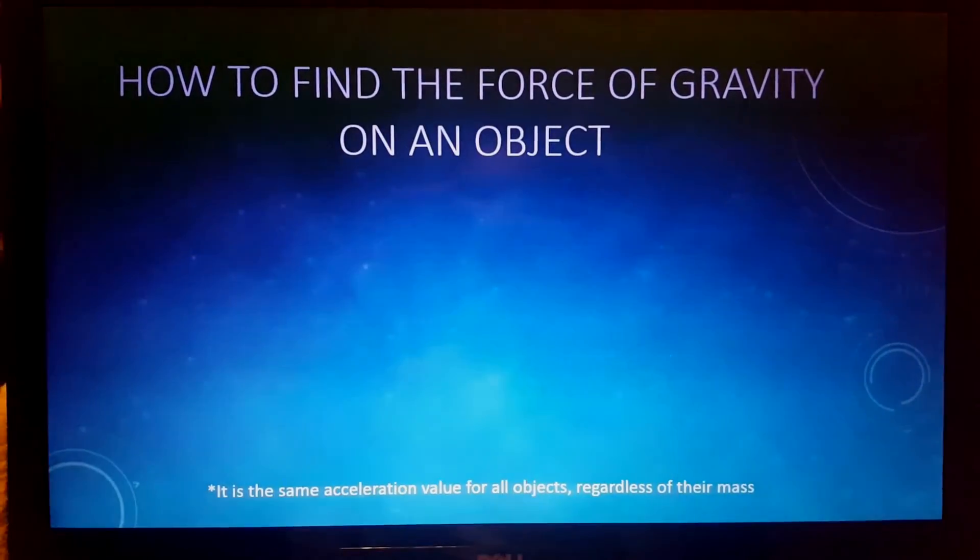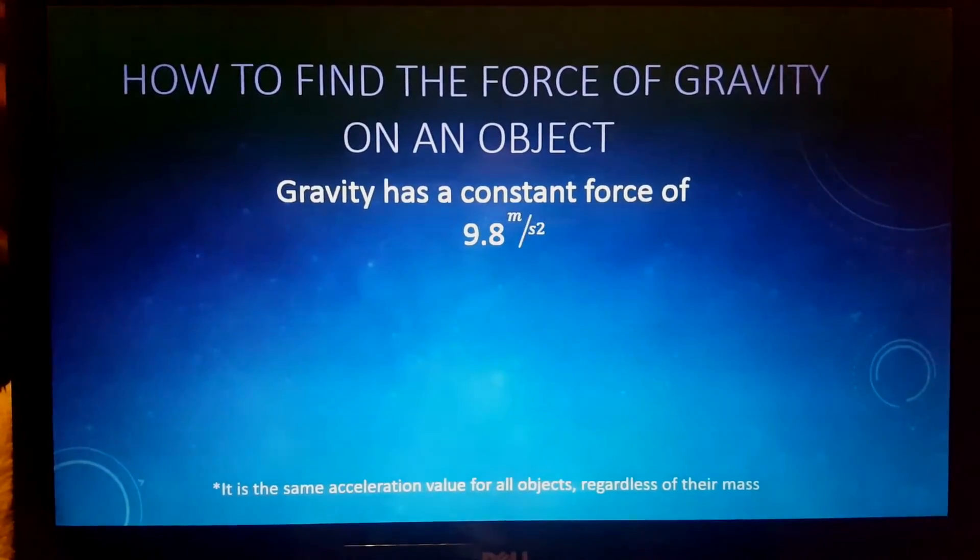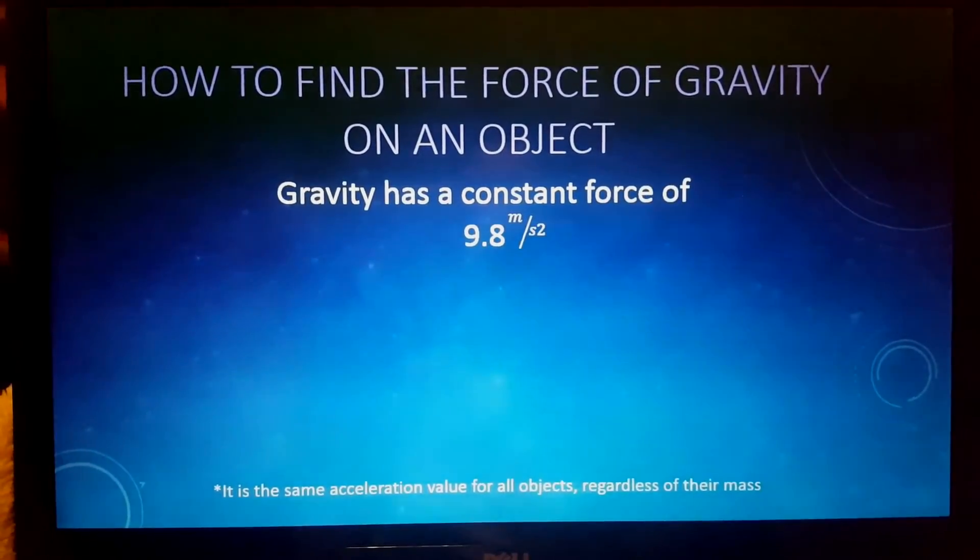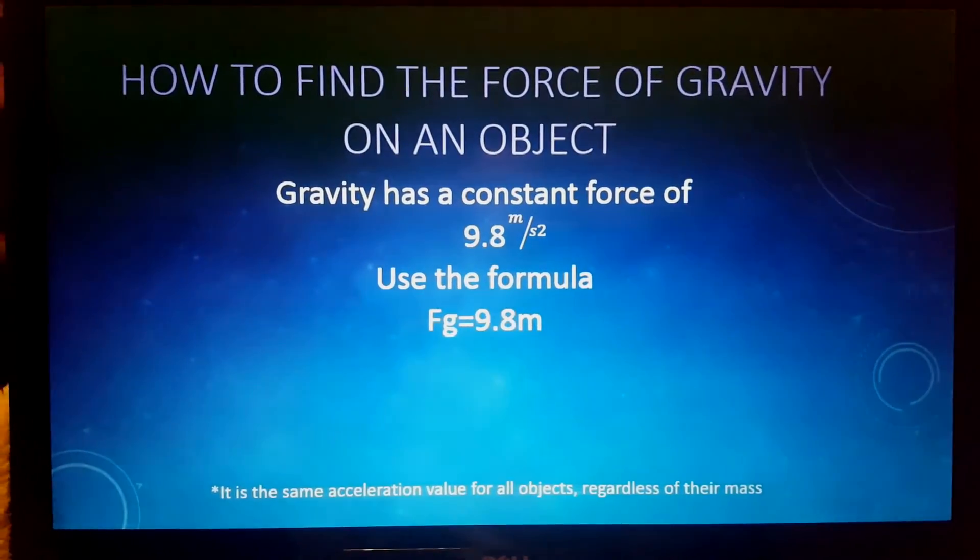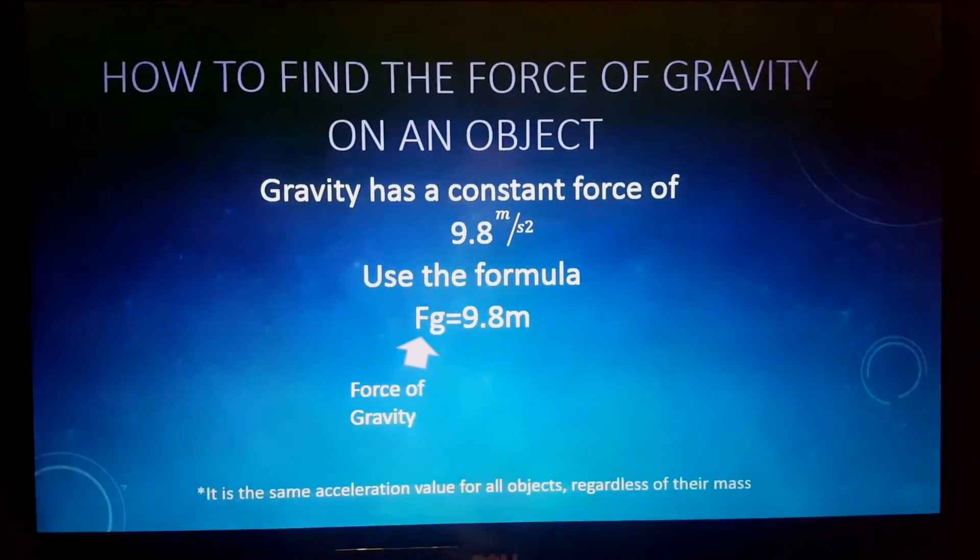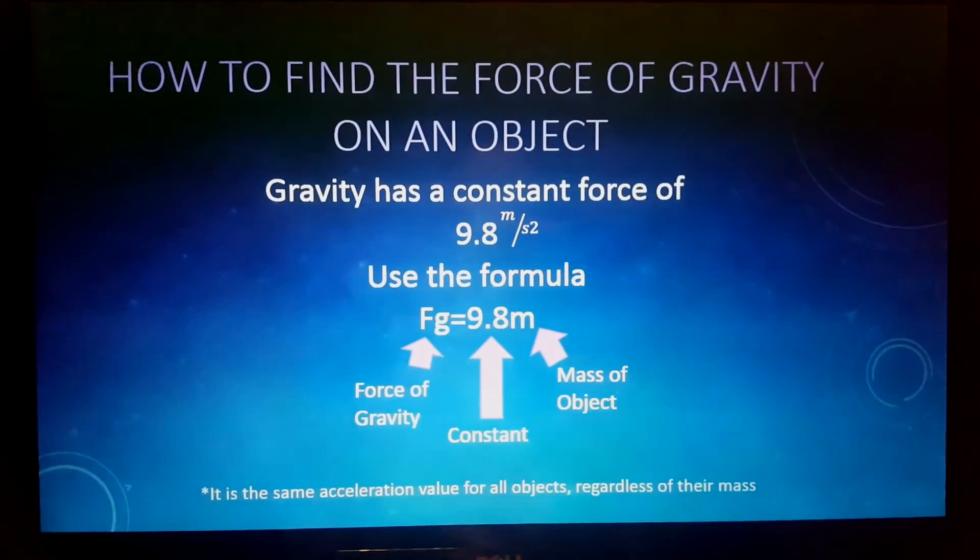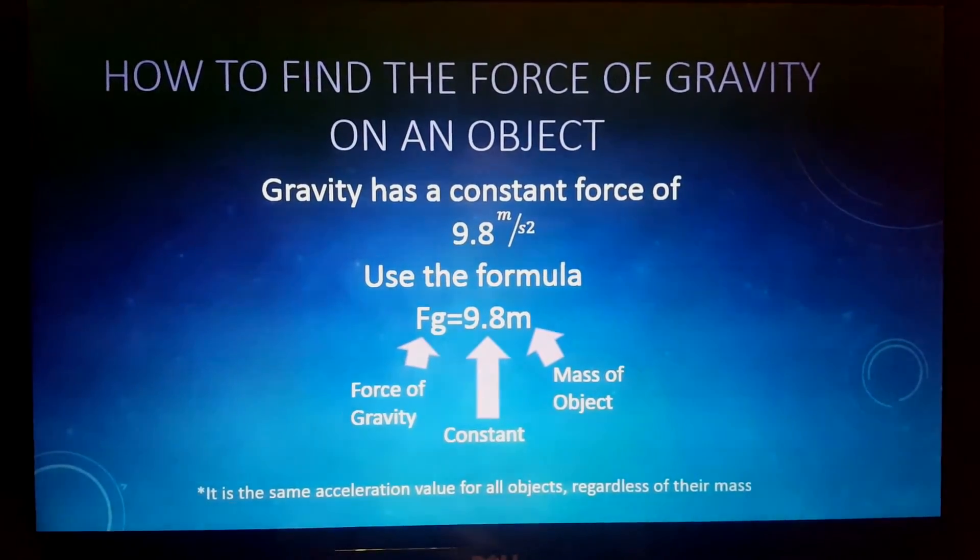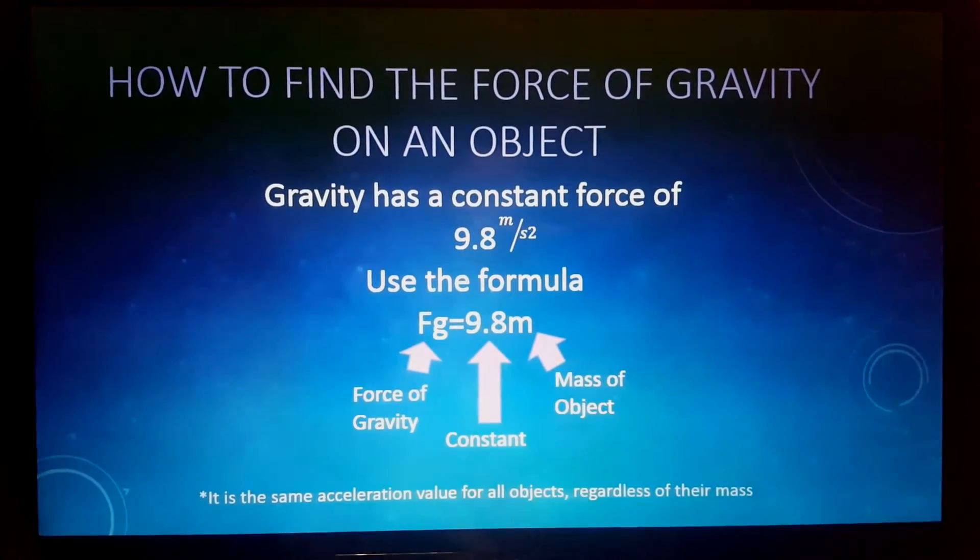How to find the force of gravity on an object? Gravity has a constant force of 9.8 meters per second squared. Use the formula f of g equals 9.8m. The f of g stands for the force of gravity. The 9.8 is the constant and m is the mass of the object. It is the same acceleration value for all objects regardless of mass.